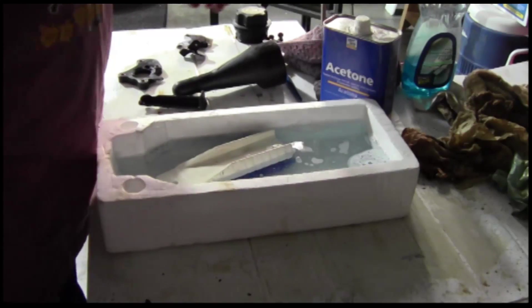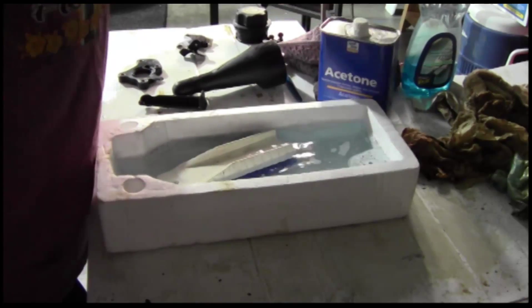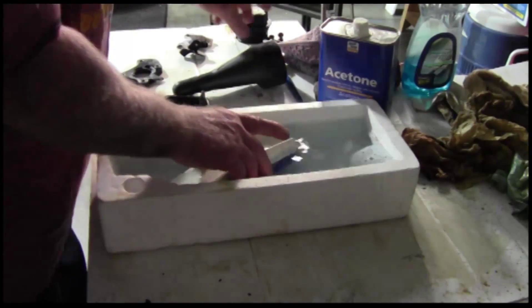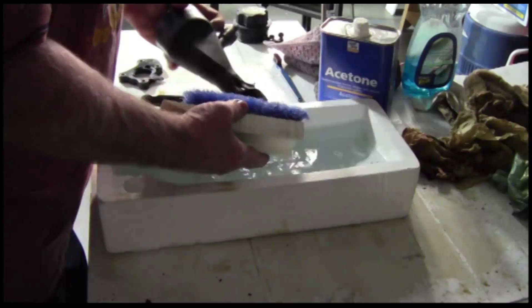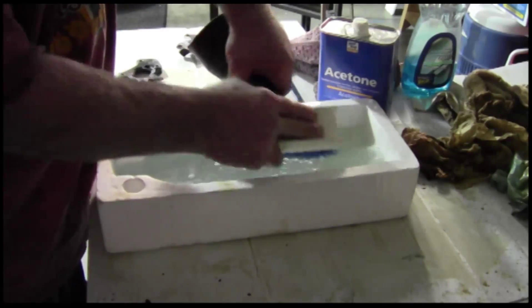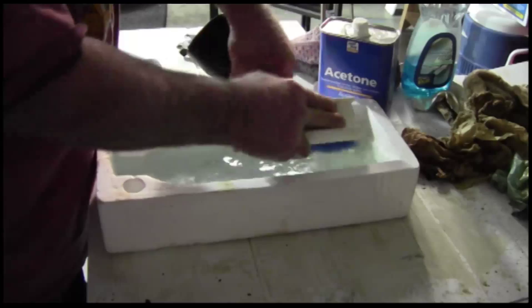In between the gunk cleaner and the acetone wash, you might want to use hot soapy water to clean off the mating surfaces. And while it will not remove all of the oil, it will remove a good portion of it.